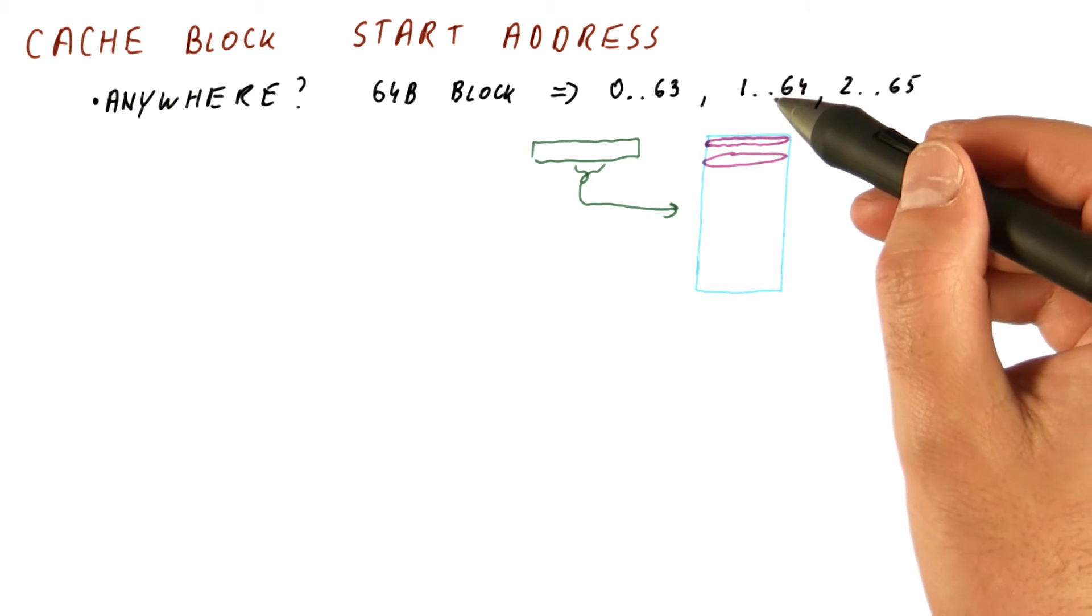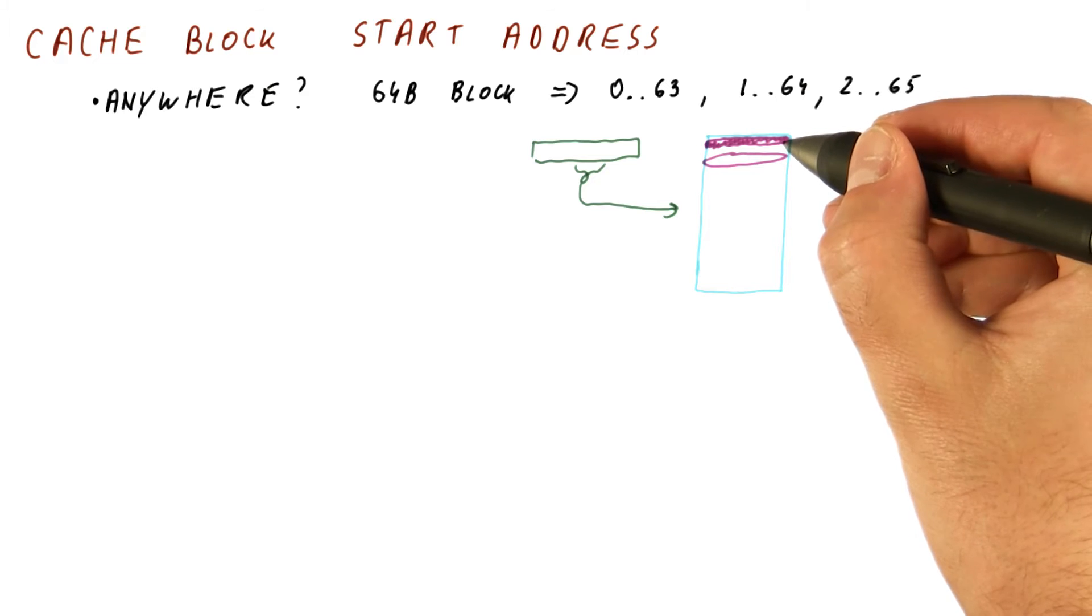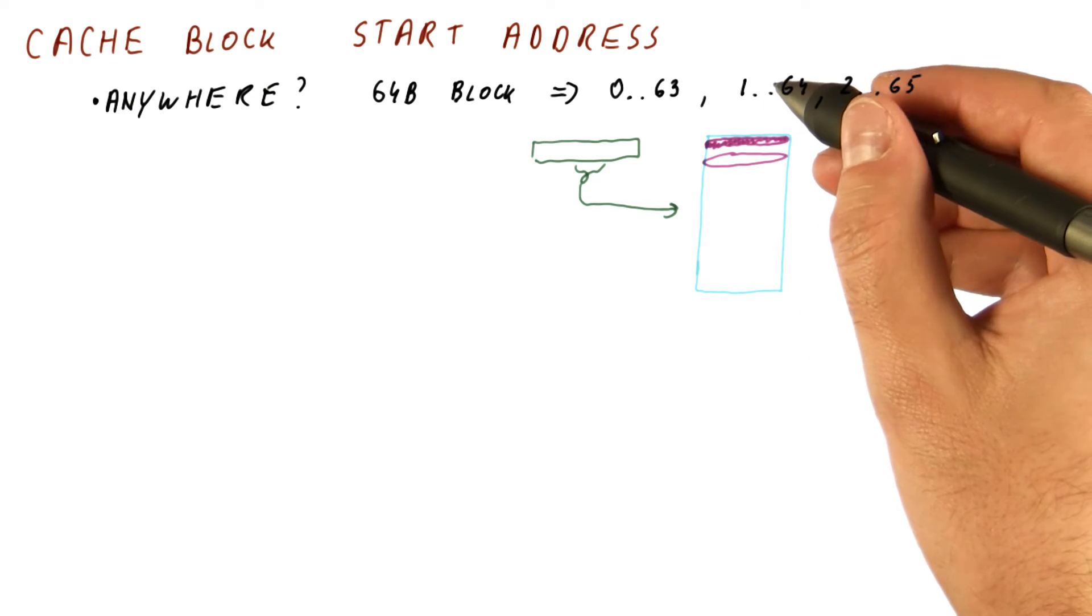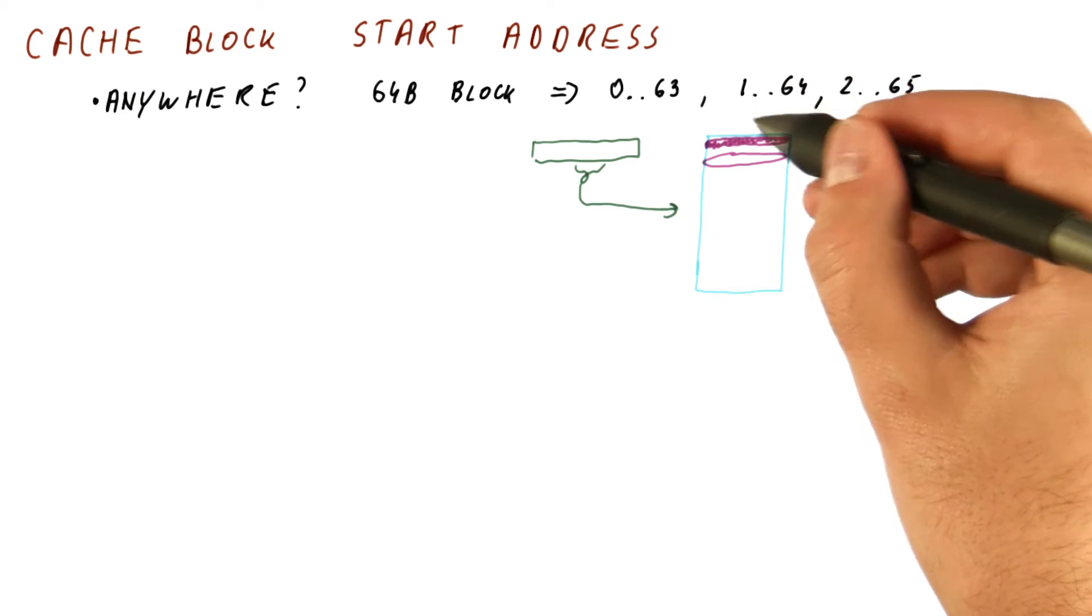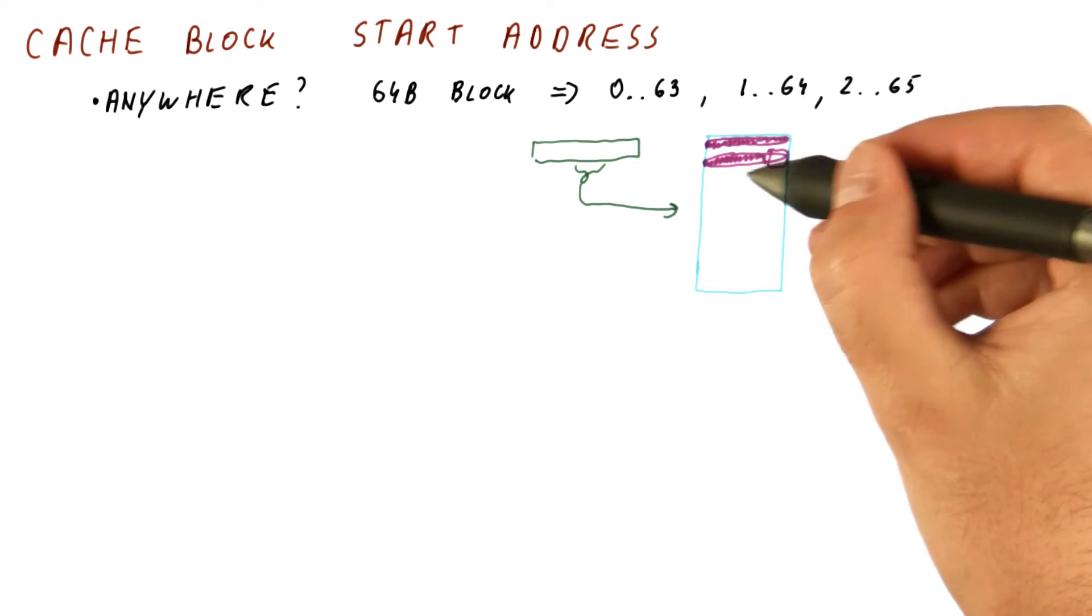Second, there is another complication, which is these blocks overlap. So the block 0 through 63 contains stuff that overlaps with most of what 1 through 64 contains. So this, other than this, is the same stuff.